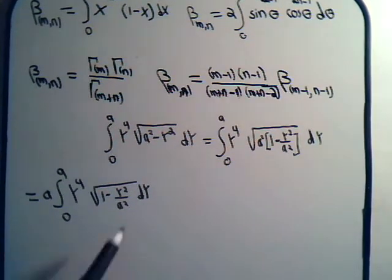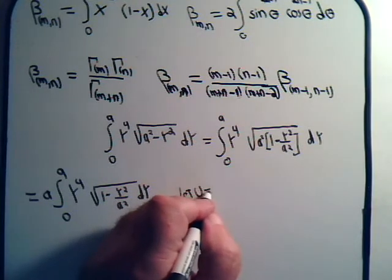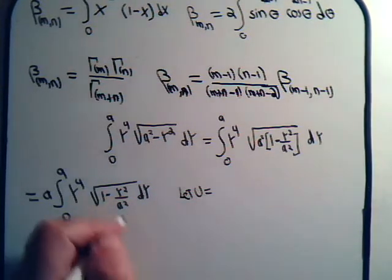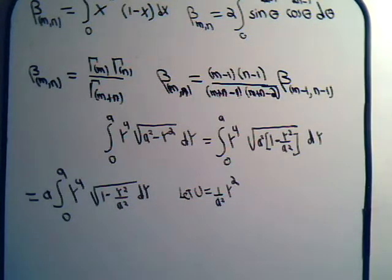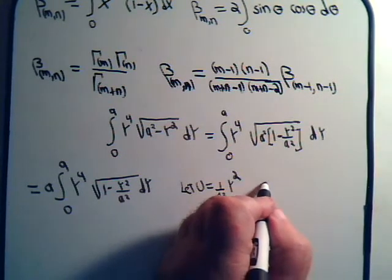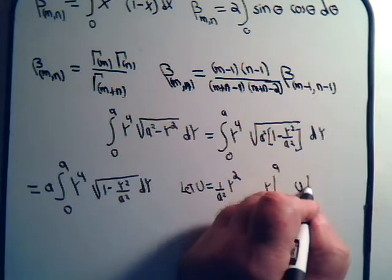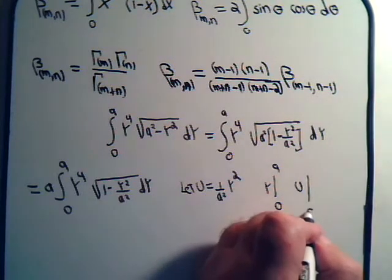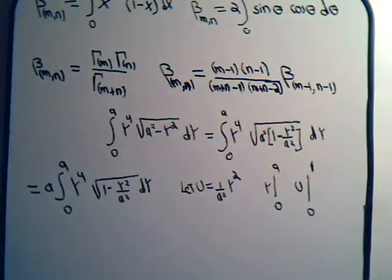This has to be 1 minus a variable to the first power, so our inclination is to put a substitution in here. Let u equal y squared over a squared. How will that affect the limits? Well, y goes from 0 to a. When y is 0, u will be 0. When y equals a, we'll have a squared divided by a squared, so the limits come out as 0 to 1.